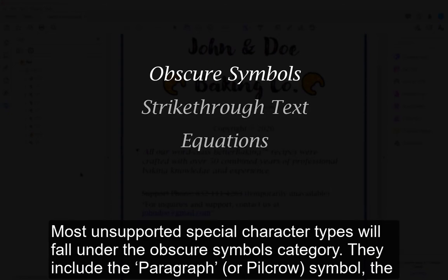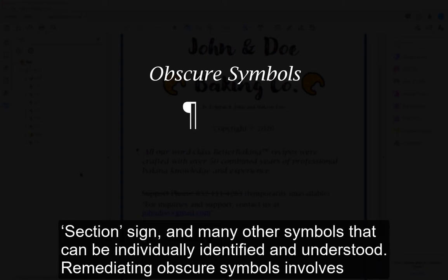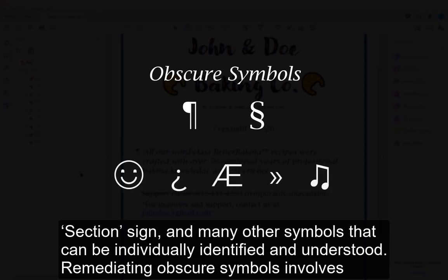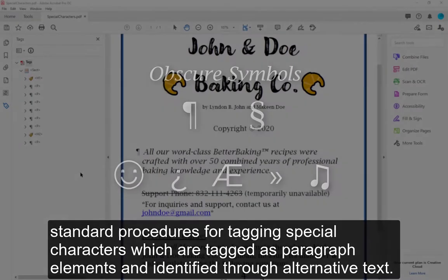Obscure Symbols. Most unsupported special character types will fall under the obscure symbols category. They include the paragraph or pilcrow symbol, the section sign, and many other symbols that can be individually identified and understood. Remediating obscure symbols involves standard procedures for tagging special characters, which are tagged as paragraph elements and identified through alternative text.